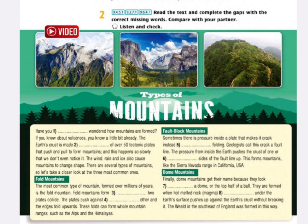Finally, dome mountains get their name because they look like a dome or the top half of a ball. They are formed when hot melted rock from under the Earth's surface pushes up against the Earth's crust without breaking it. The Weald in the south east of England was formed in this way.